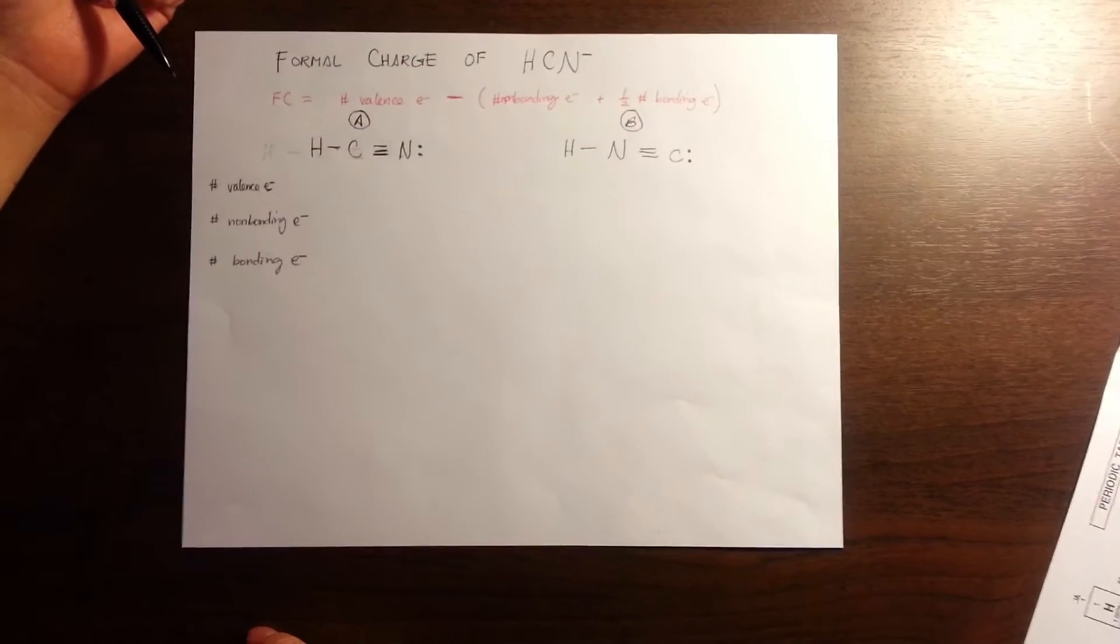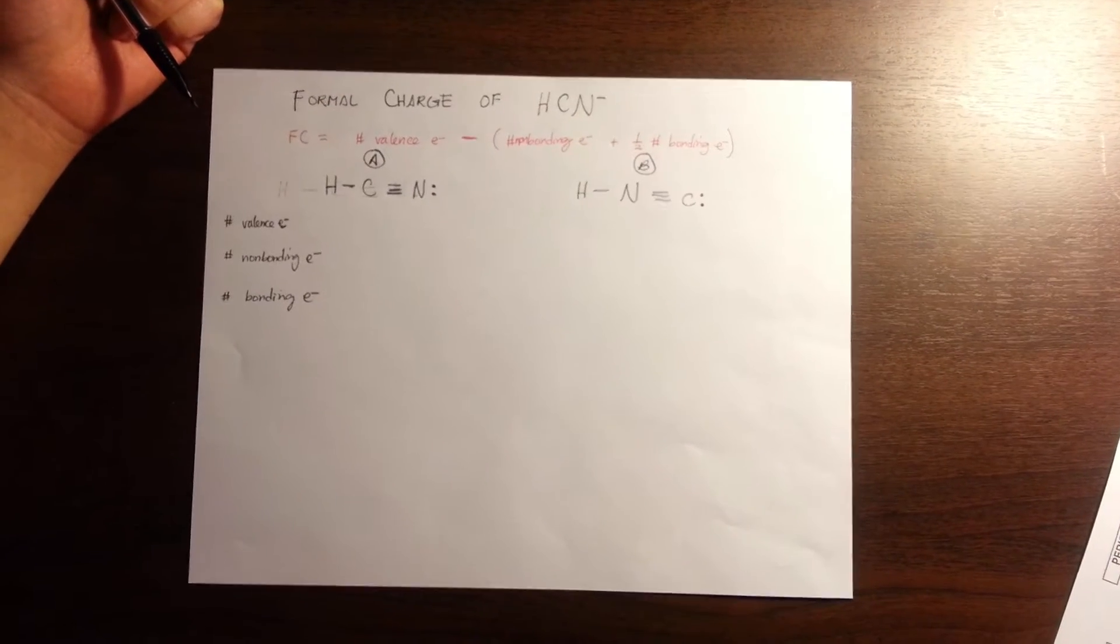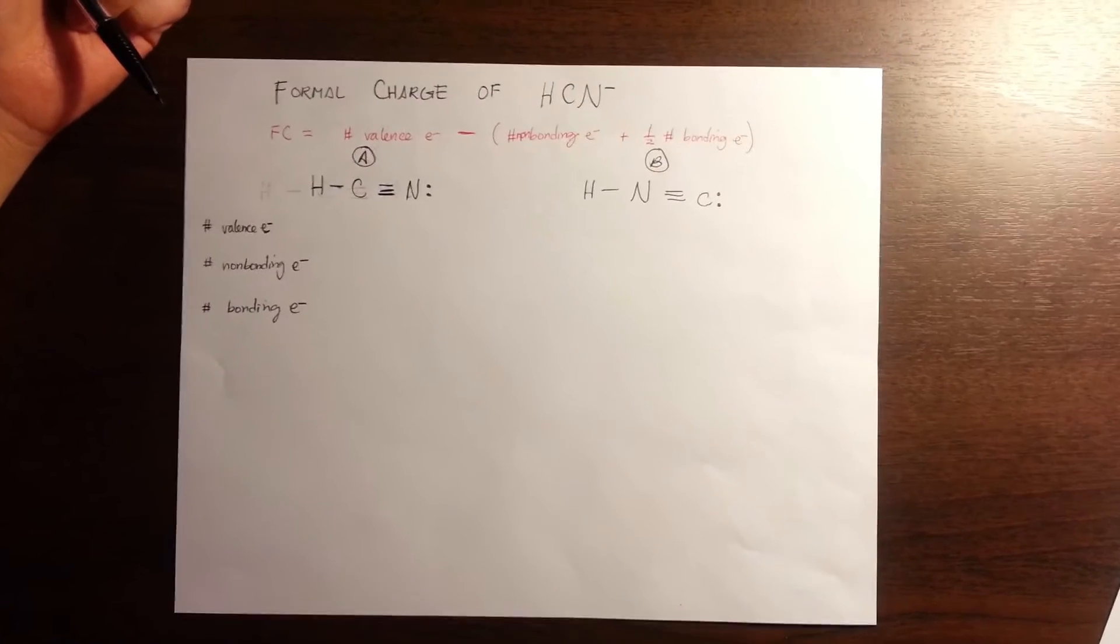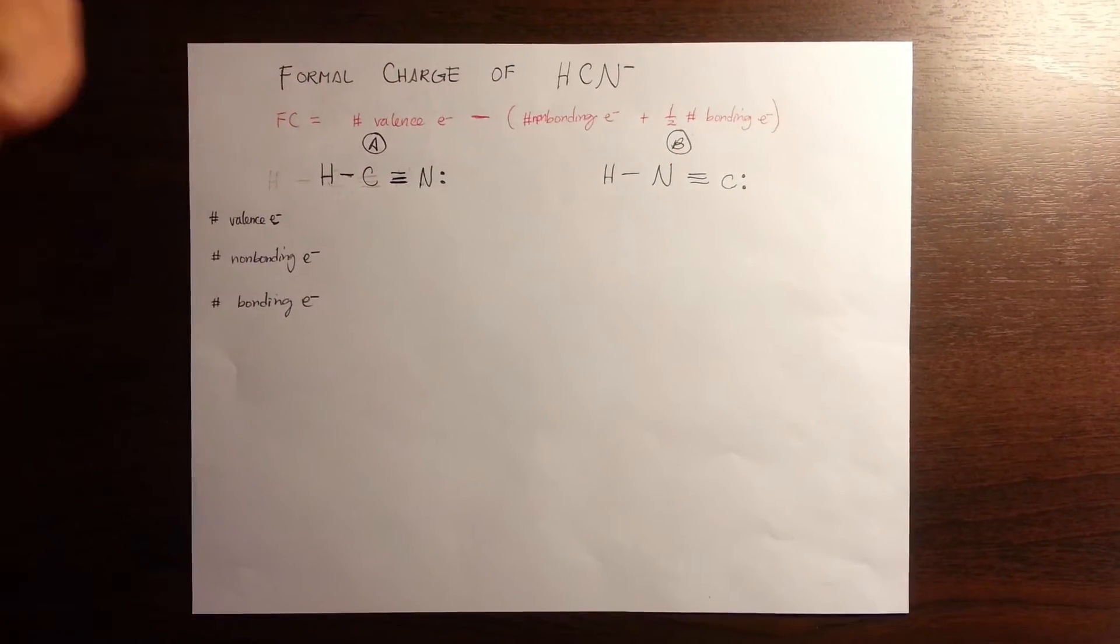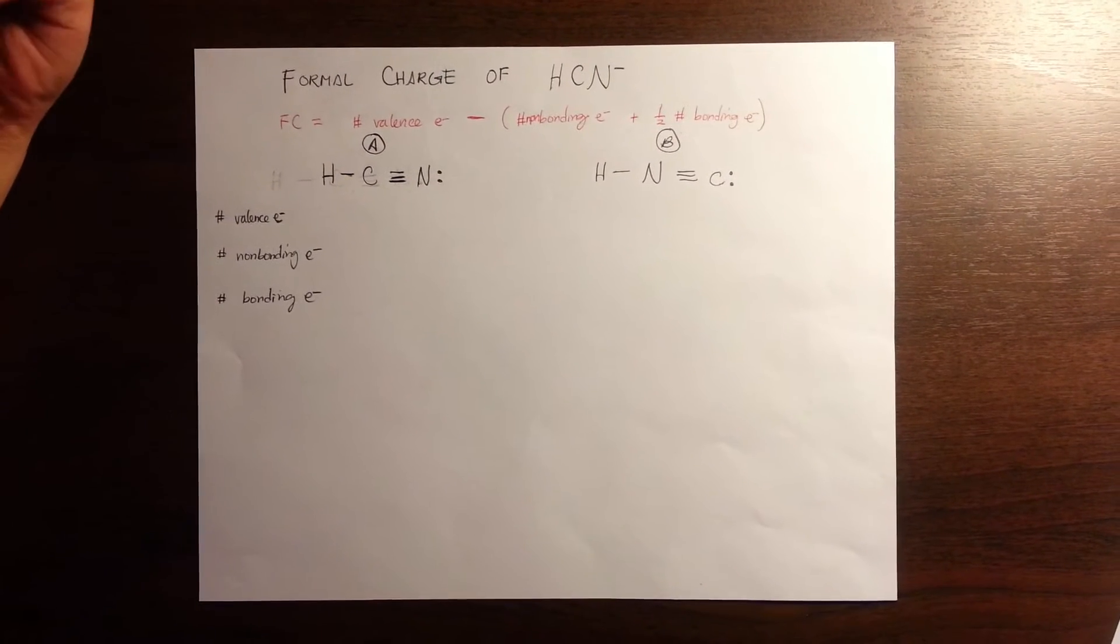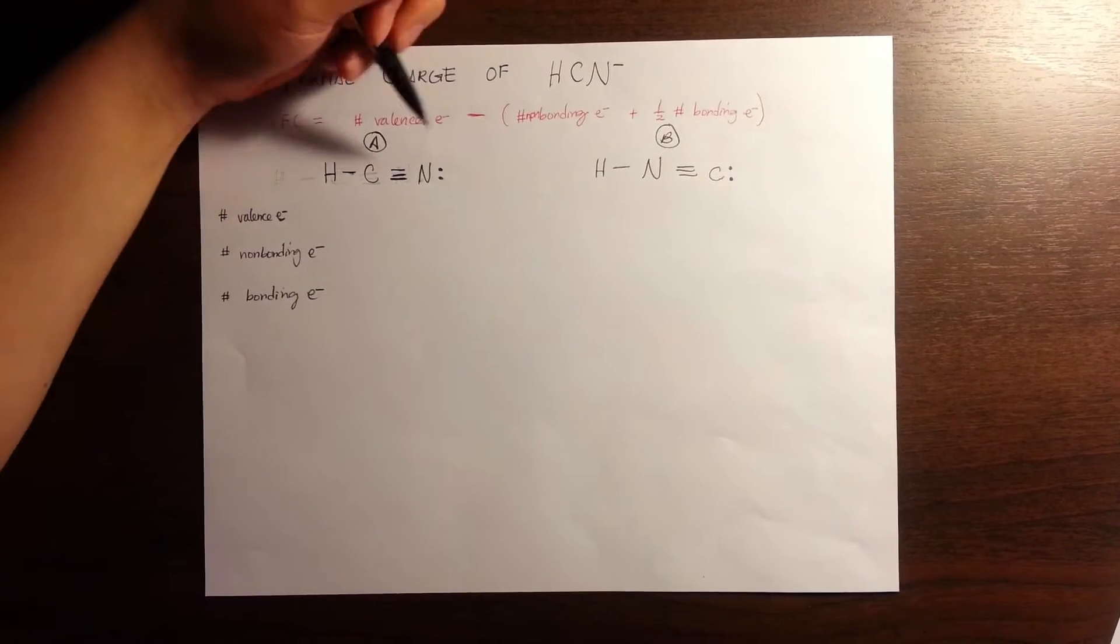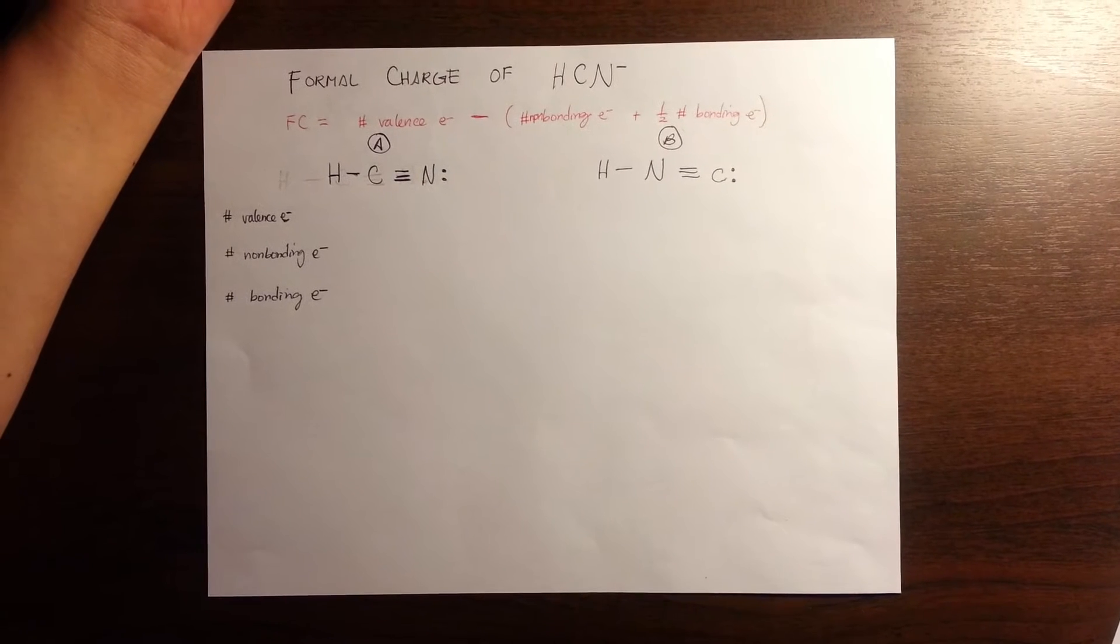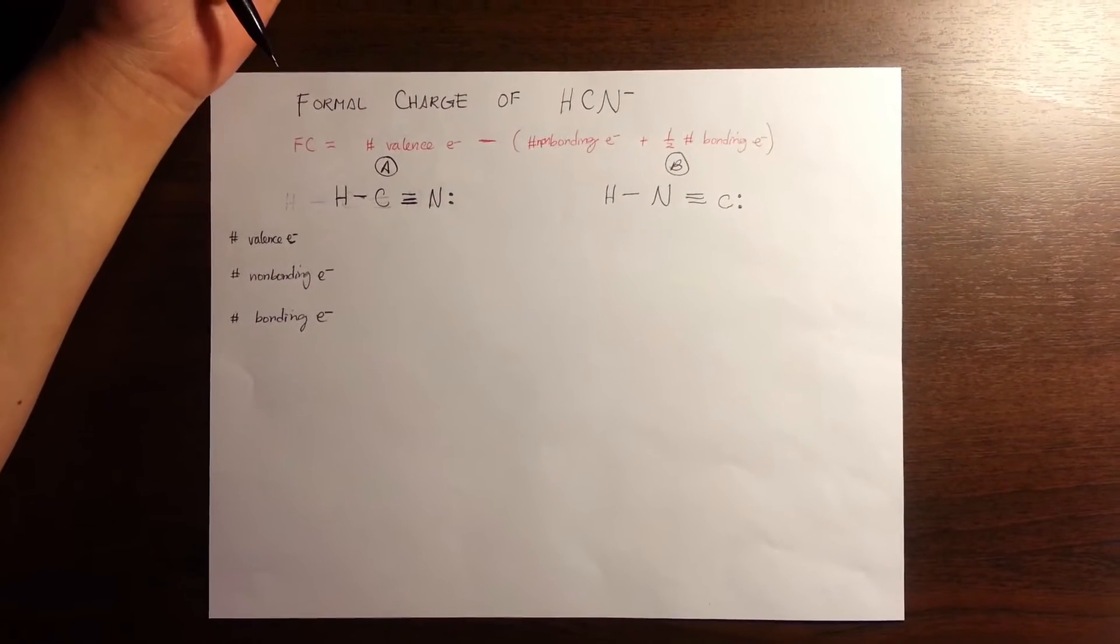We have two different structures for HCN⁻ ion, and we're going to find the formal charge on both. Just a disclaimer before we start: this is not an ion that makes a resonance hybrid, but just a normal ion. We're going to figure out the formal charge on it.